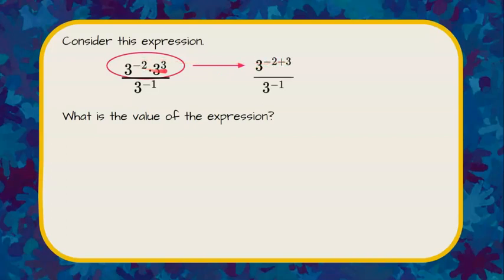So I'm adding the two exponents of negative 2 and 3, and I'm going to leave the denominator alone right now. So negative 2 plus 3 is equivalent to 1.